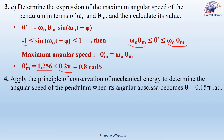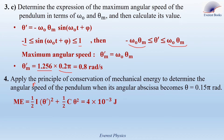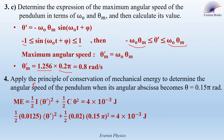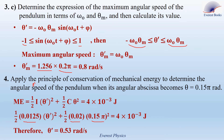Question 4: Apply conservation of mechanical energy to find the angular speed theta prime when theta equals 0.15 pi radians. The mechanical energy equals one half I theta prime squared plus one half C theta squared, which equals the mechanical energy at T equal 0, which is 4 times 10 to the power minus 3 joules. Substituting I equal 0.0125, C equal 0.02, and theta equal 0.15 pi, the angular speed equals 0.53 radians per second.